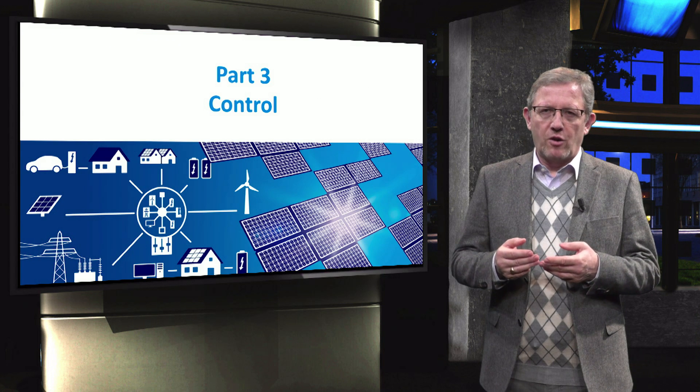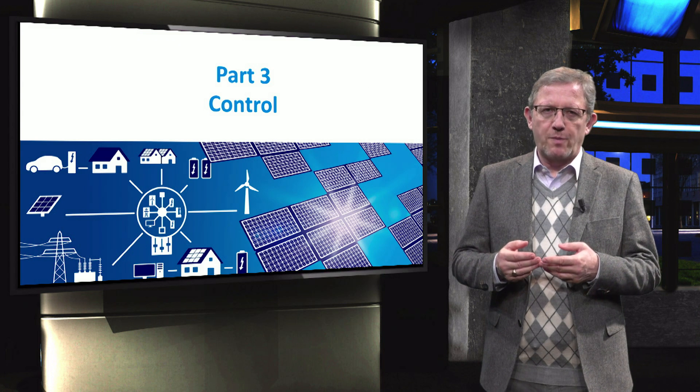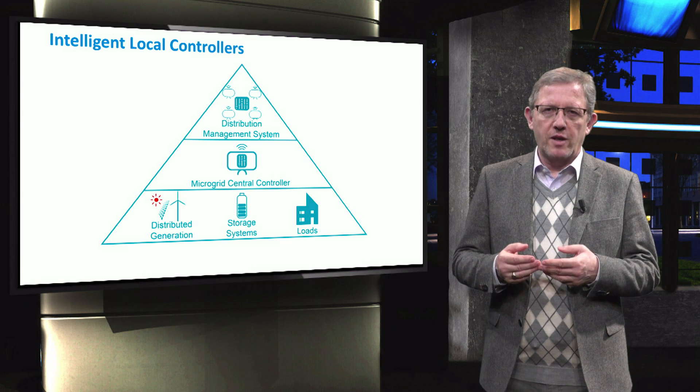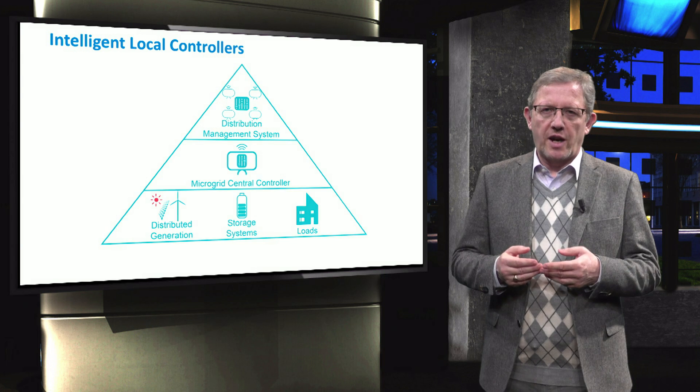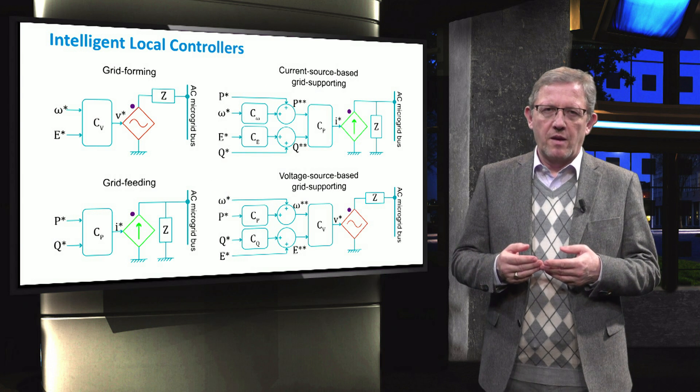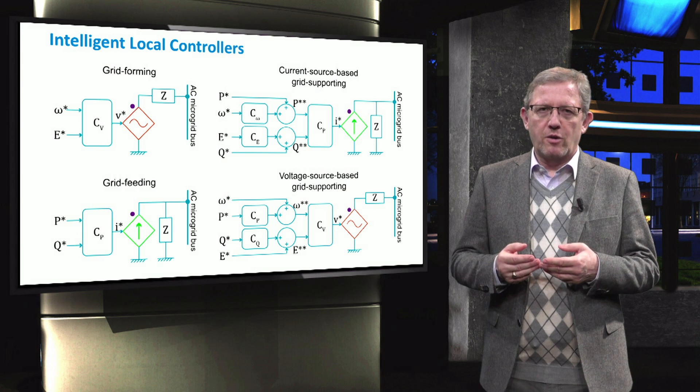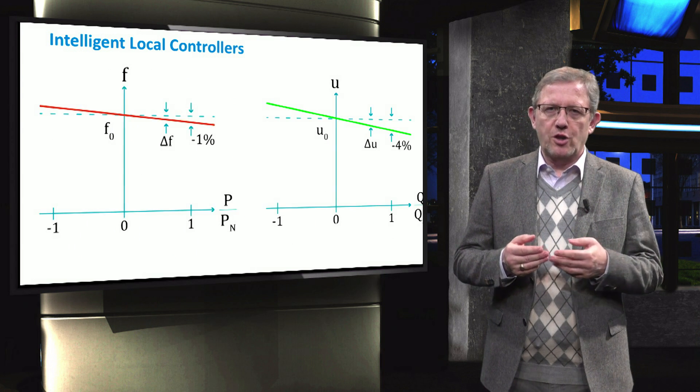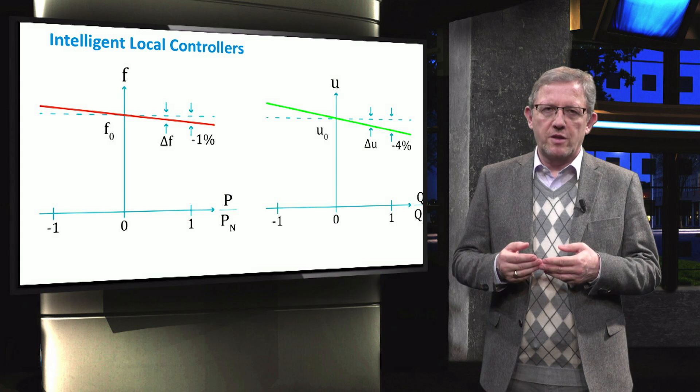In the third part of the course, we will discuss the control aspects of microgrids. You will learn about the hierarchical control in microgrids at three levels, which are applied using various types of power converters. We review these power converter types and explain how the frequency and voltage control will be implemented in these converters.